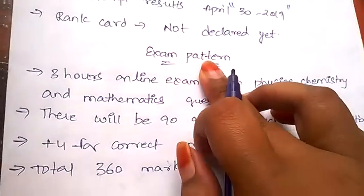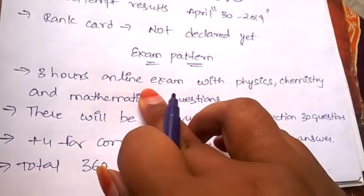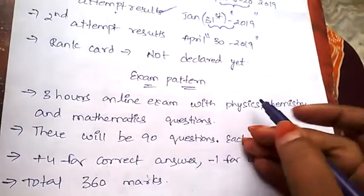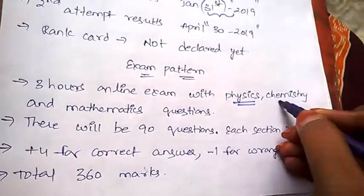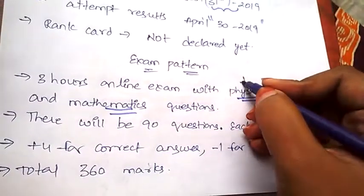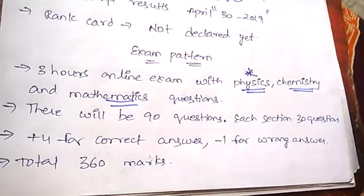Now let's see the exam pattern. Exam pattern of the JEE Mains 2019 is a 3-hour online exam and it contains questions on subjects like physics, chemistry, and mathematics. There will be 90 questions, each section containing 30 questions.